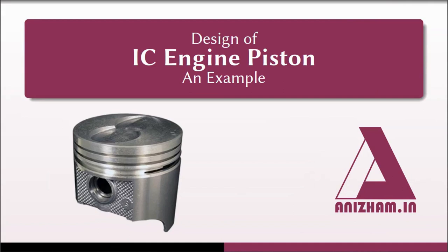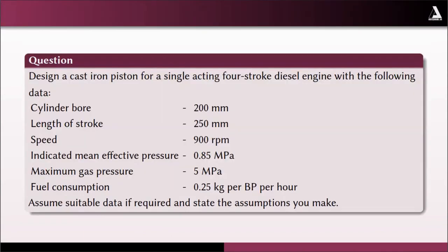In today's session we will be discussing a numerical example of design of IC engine piston. The question is: design a cast iron piston for a single acting four-stroke diesel engine with the following data — cylinder bore 200 millimeter, length of stroke 250 millimeter, speed 900 rpm, indicated mean effective pressure 0.85 mega Pascal, maximum gas pressure 5 mega Pascal, fuel consumption 0.25 kilogram per BP per hour. Assume suitable data and state the assumptions.